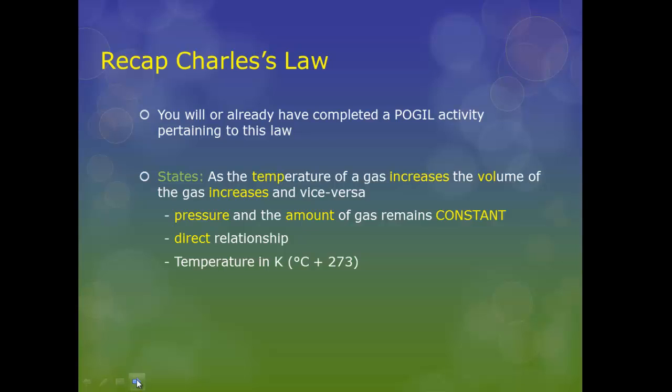The formula will look like V1 over T1 is equal to V2 over T2. Because we have T as temperature, and it's likely going to be reported to us in Celsius, you have to convert it to your Kelvin temperature. So to get Kelvin, Kelvin is equal to Celsius plus 273.